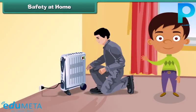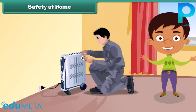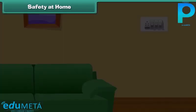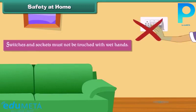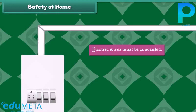Electricity is man's best friend. But careless use of electricity and electrical appliances can lead to fatal accidents. To avoid mishaps, plug points must be covered when not in use. Switches and sockets must not be touched with wet hands. Electric wires must be concealed.